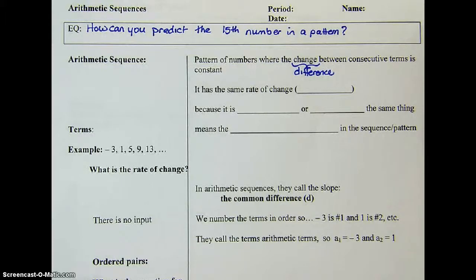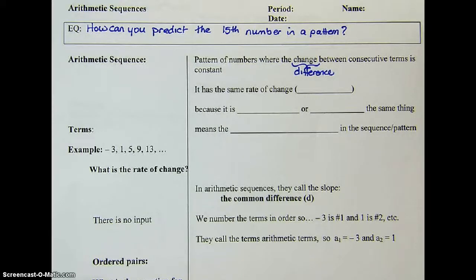An arithmetic sequence is a pattern of numbers where the change between consecutive terms is constant. So we're going to have a pattern of numbers, and the difference between the numbers that are next to each other is going to be the same number every time.